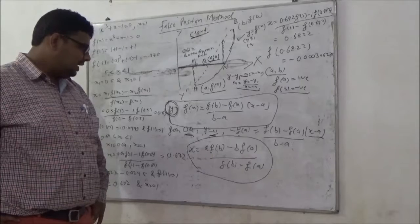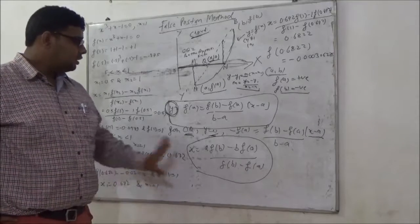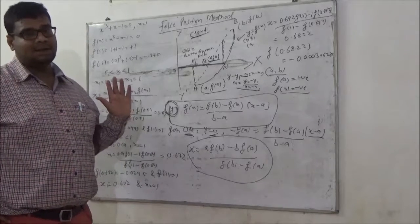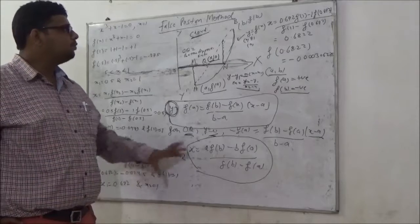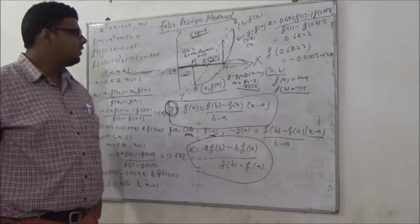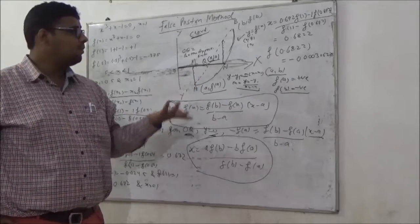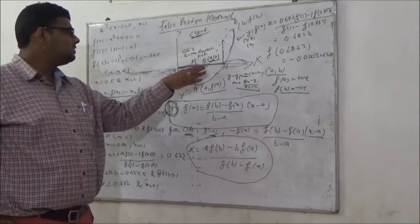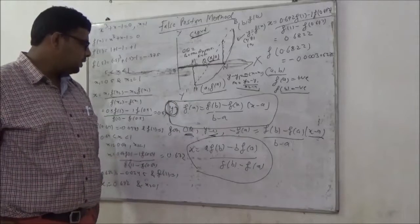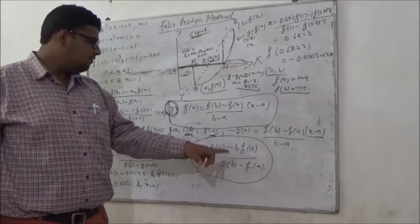This x is my better approximate root, but you have to do repeated trials — it is not the final root. This is the geometrical interpretation: a curve intersects at point N, and I drew a chord over the interval a to b such that f(a) and f(b) have opposite signs. The chord intersects at Q, and OQ is the better approximate root. The formula is: x = [a·f(b) minus b·f(a)] divided by [f(b) minus f(a)].